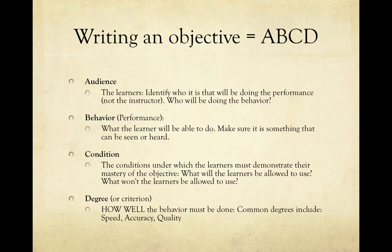Condition — under what condition? For example, 'students will be able to identify the 50 states when given a map of the United States.' Can they just identify them, can they recall them, can they identify just the shape of the states, just one state, the location? So it's when given a map. The degree is how well — is it 100%, is it with 80% comprehension? What is the degree?